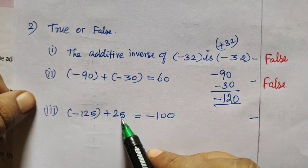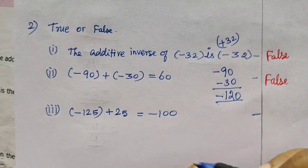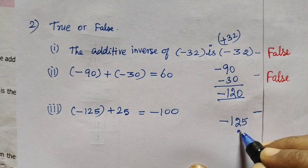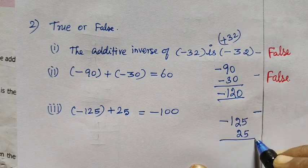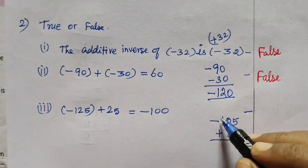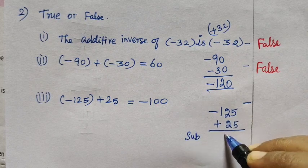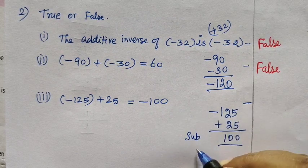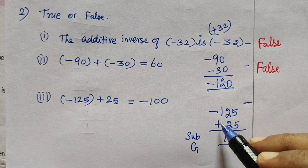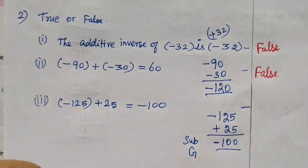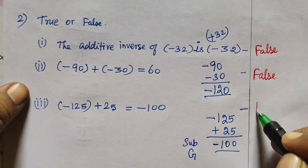Then minus 125 plus 25 equal to minus 100. Workout. Minus 125 then 25. Same sign or opposite sign? Opposite sign. Opposite sign, what do you do? Separate. Separate. Always you are using greater number sign. Greater number sign minus. So minus 100 is correct. So this is true.